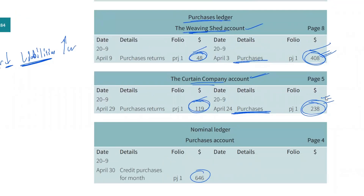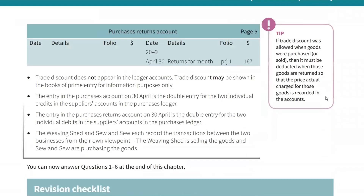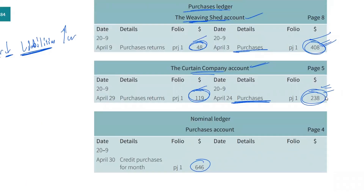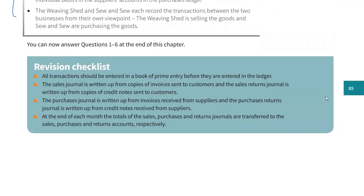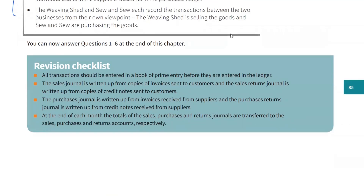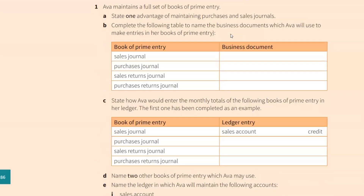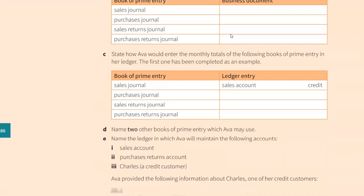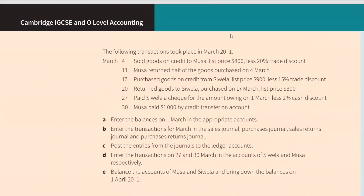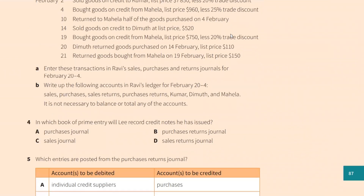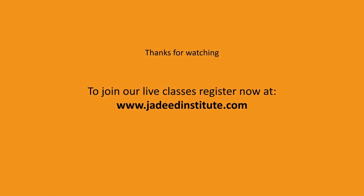These purchase returns will be credited in the purchase returns account, acting as the double entry for the two individual entries. That's the revision checklist and we're done with this chapter. For exam-style questions, we can do the first five from the textbook — the sixth we'd rather do from past papers. Let me stop the recording and we can continue talking.